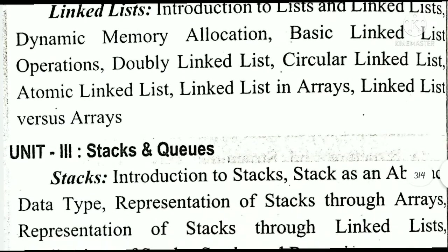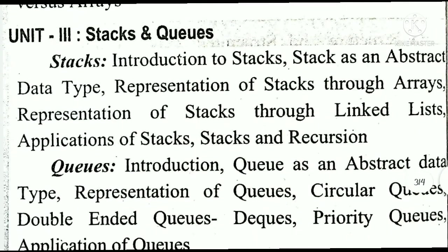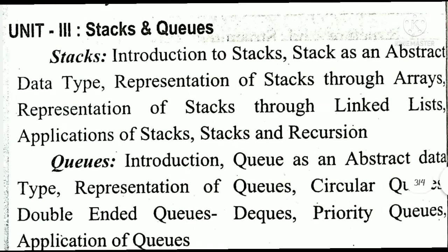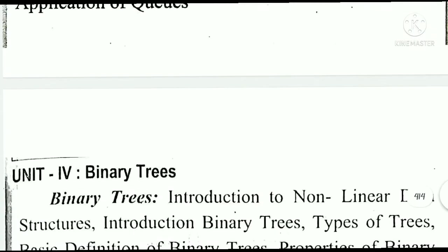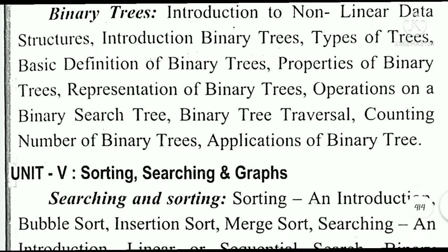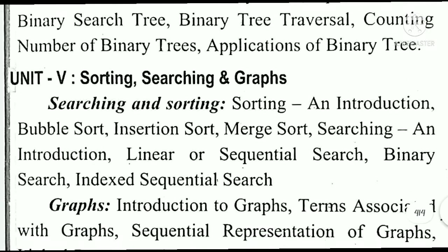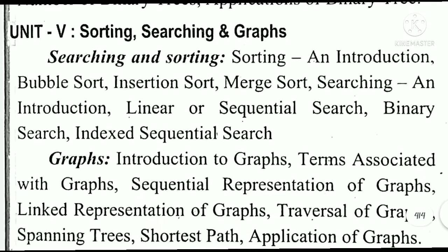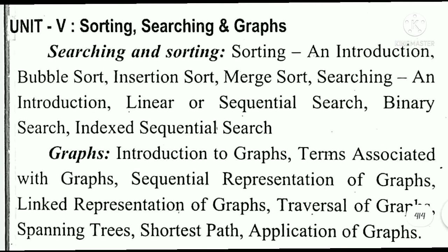Unit 3 is Stacks and Queues — you can see the topics for stacks and queues listed here. Unit 4 covers Binary Trees with a single main topic. Unit 5 is Sorting, Searching, and Graphs — one topic each for searching and sorting, and graphs as a separate topic. So friends, these are the topics across all five units.